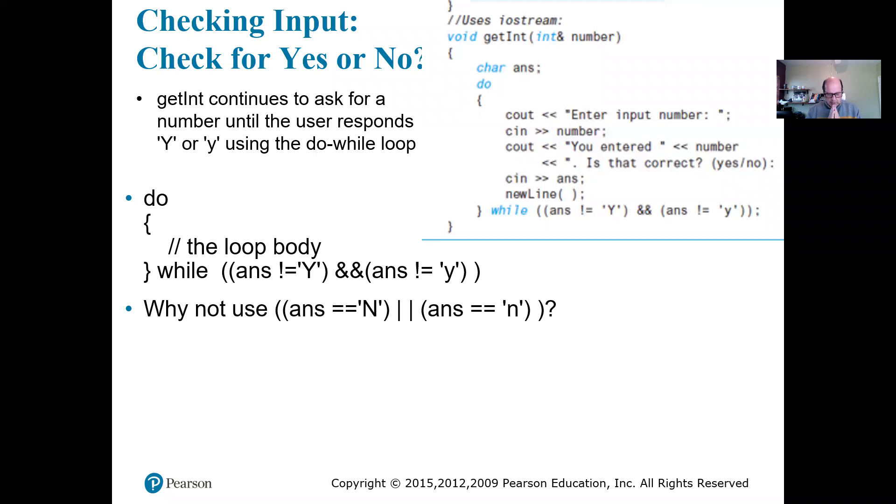Think for a second that y instead of n, which is the natural thing. We are asking the user is this a correct number and if they say no, we want to continue. So why do we choose to check for not y instead of n?